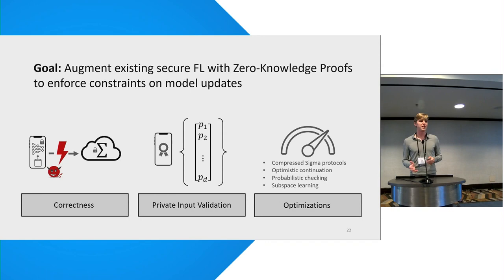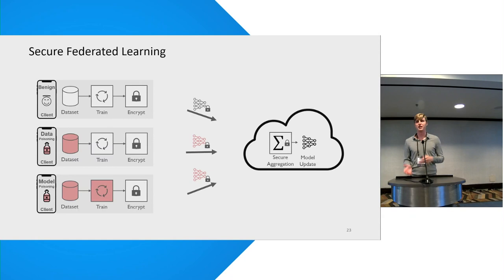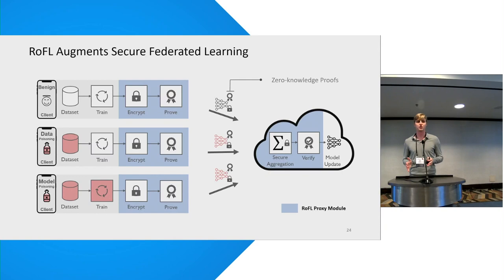The goal here is to augment existing secure federated learning protocols with the ability to enforce predefined constraints on model updates in a privacy-preserving way. To achieve this we adapt secure aggregation to support correctness under malicious clients, and then extend it to support scalable zero-knowledge proofs. To improve scalability further we propose several optimizations, but I will focus on the first two items for the rest of this talk. There are many ways to build secure aggregation protocols using techniques such as MPC and multi-key FHE, but the most suitable approach for the FL setting is based on additive masking, and in ROFO we extend this existing tailored secure aggregation protocol with zero-knowledge proofs.